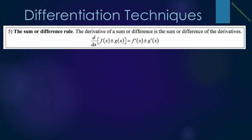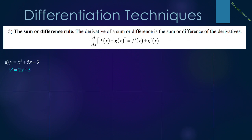The fifth rule is called the sum or difference rule. It says that the derivative of a sum or difference is the sum or difference of the derivatives: the derivative of f of x plus or minus g of x equals f prime of x plus or minus g prime of x. So if we have a sum or difference, we take the derivative of each term. In A, y equals x squared plus 5x minus 3: the derivative is 2x plus 5. The 3 is a constant, so its derivative is 0 and we do not write it.